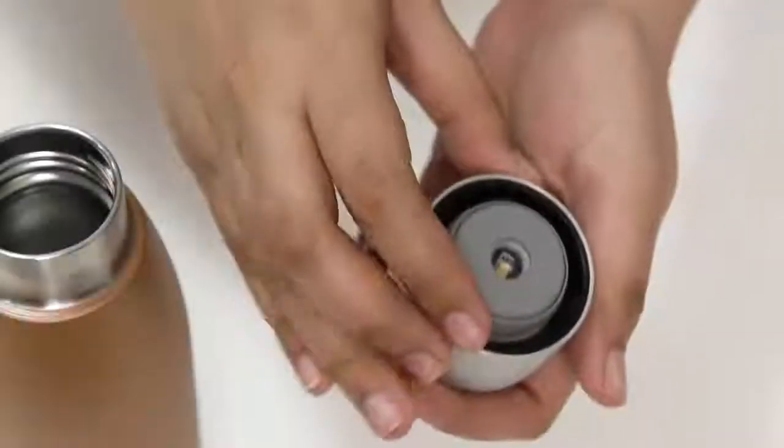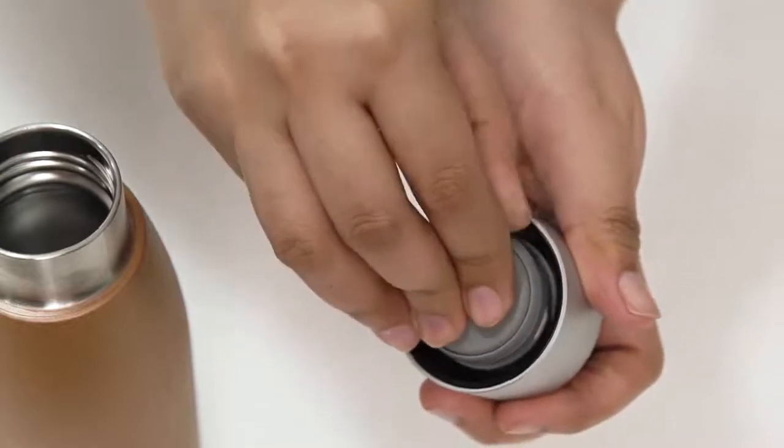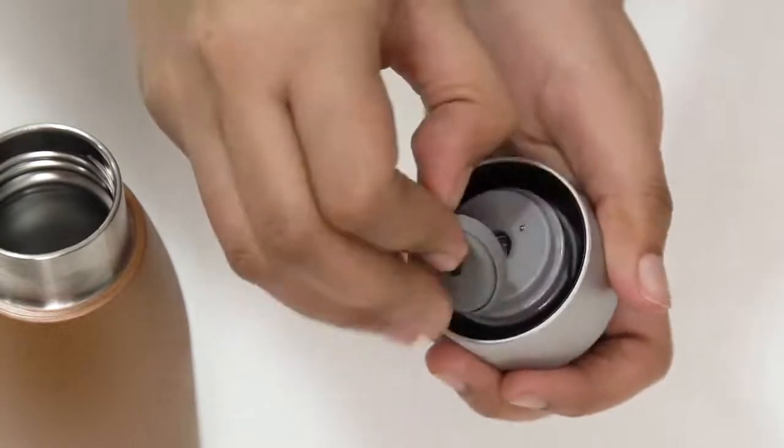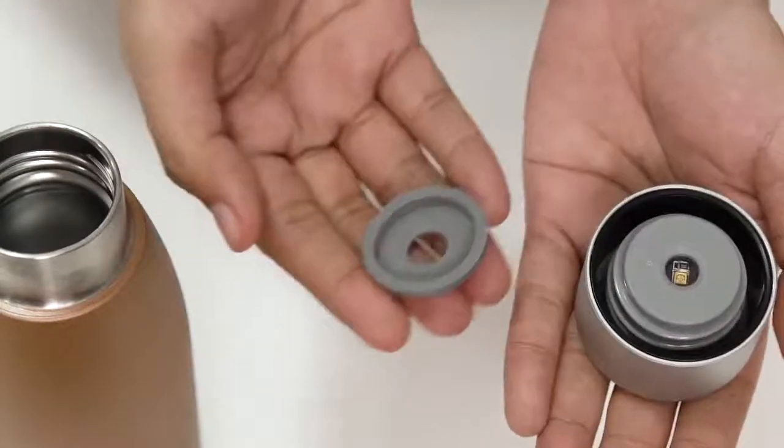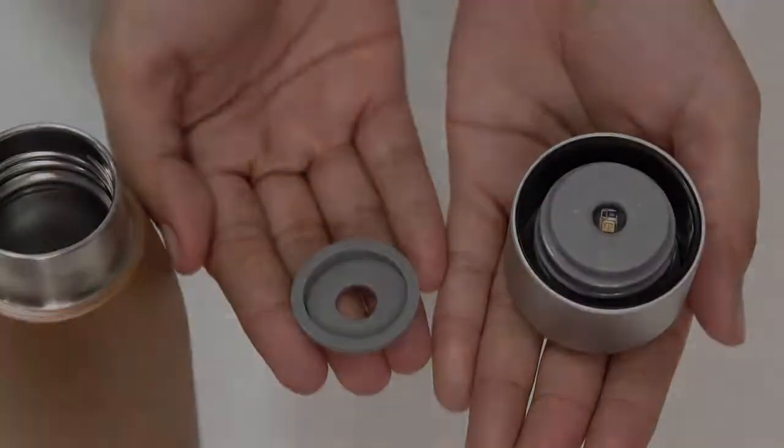The next thing we will learn is how to charge the sterilizing lid. First, remove the lid from the bottle. Then, flip over the lid and remove the silicone cover to expose the charging contractors.